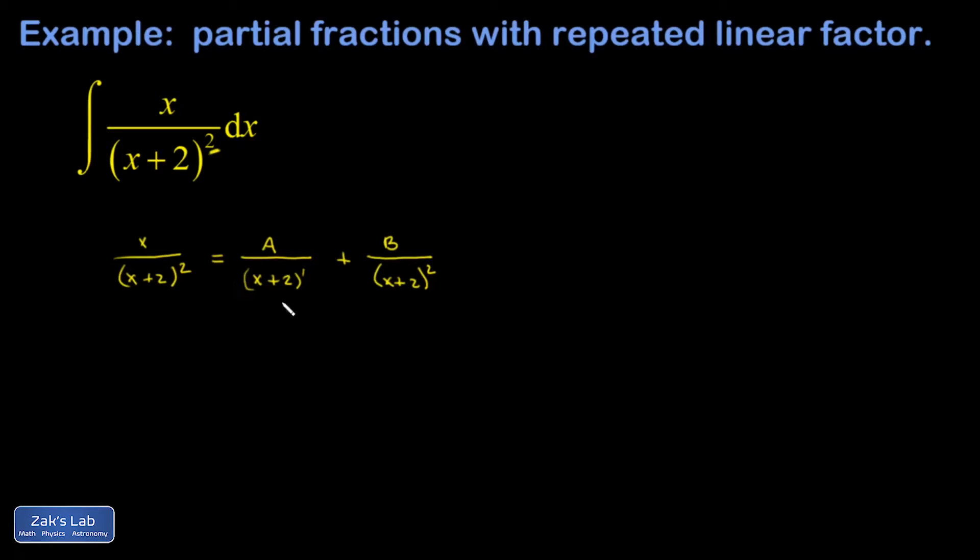I'm going to multiply both sides by (x+2)². That gives me x on the left-hand side, and one of those factors cancels.